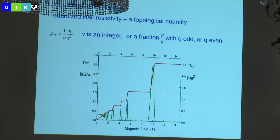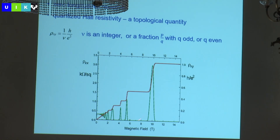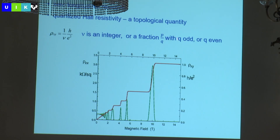The quantization is in units of h over e squared. The Hall resistivity is 1/ν times h over e squared. If ν is an integer, it's called the integer quantum Hall effect. If ν is a fraction — usually written as p over q, where q is frequently odd but sometimes even — it's called the fractional quantum Hall effect.